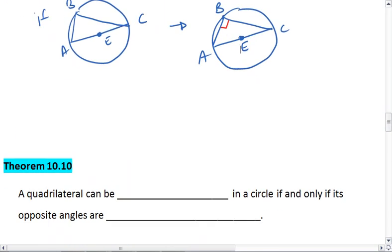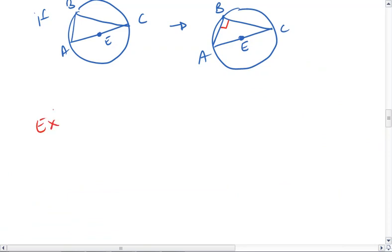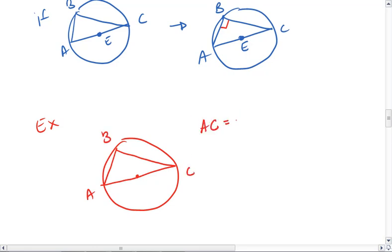Let's look at a quick example. Let's say AC is 10, BC is 8, and I want you to find the value of AB. Well, hopefully you realize that since AC is a diameter, that means we have a right triangle. Which means that AB squared, or X squared, plus 8 squared equals 10 squared.